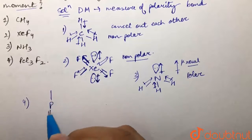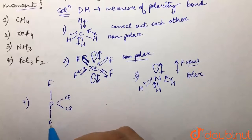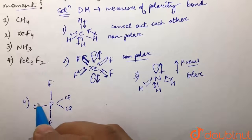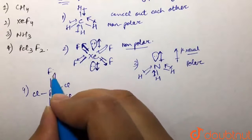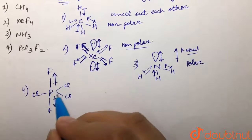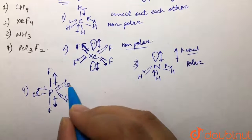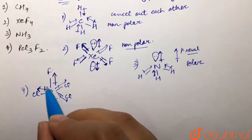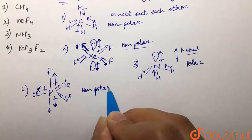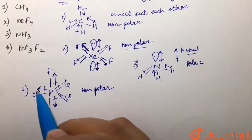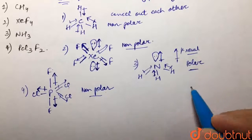Fourth, we have PCl3F2. The axial positions are occupied by fluorine, because more electronegative elements always occupy axial positions. The bond dipoles towards the two axial fluorines cancel each other out. The resultant of the two equatorial P-Cl bond dipoles cancels with the remaining bond dipole. So PCl3F2 is also a non-polar molecule.